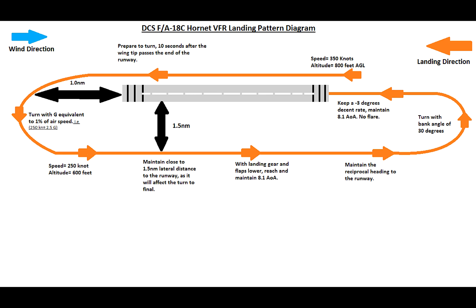It's very important to maintain 1.5 nautical miles lateral distance to the runway, which will affect your final turn to the final approach. Then you'll drop your landing gear and flaps, maintain 8.1 degrees AOA, and then turn with a bank angle of 30 degrees to your final heading, maintain a negative 3 degrees descent rate, and maintain 8.1 degrees AOA with no flaring. You can go ahead and pause this diagram and view it at your leisure.